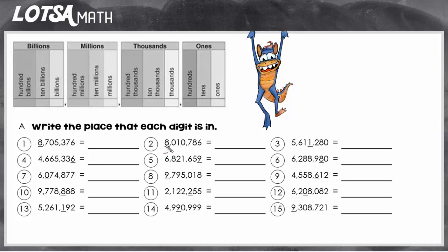So the place has a name, the 7th column has a name. It's millions. So this 8 is in the millions place. So on this line, you're just going to write millions.